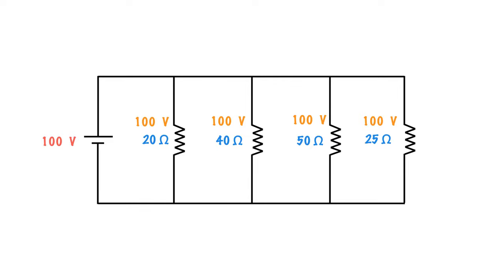Then we can use Ohm's law to calculate the current through each branch, just by going 100 volts divided by 20 ohms for that branch, 100 volts divided by 40 ohms for that branch, and so on. So 100 divided by 20 equals 5 amps, 100 divided by 40 equals 2.5 amps, 100 divided by 50 equals 2 amps, 100 divided by 25 equals 4 amps. Now we have the current running through each branch.